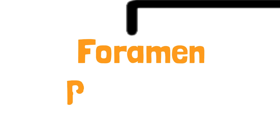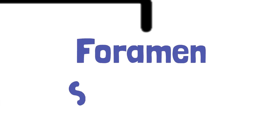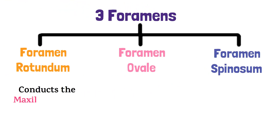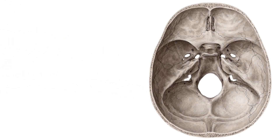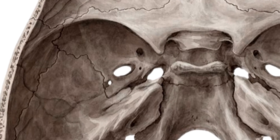The greater wing also has three important foramina: foramen rotundum, foramen ovale, and foramen spinosum. Foramen rotundum conducts the maxillary nerve, foramen ovale conducts the mandibular nerve, and foramen spinosum conducts the middle meningeal artery. This is the superior view of the base of the skull. This yellow circle marks foramen rotundum; just below it is foramen ovale, encircled in pink; and encircled in red is foramen spinosum.